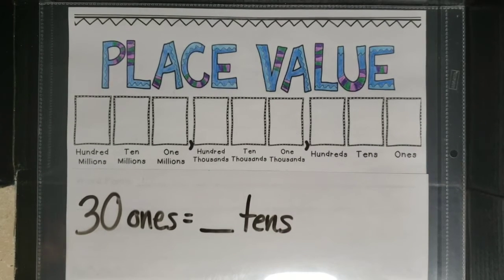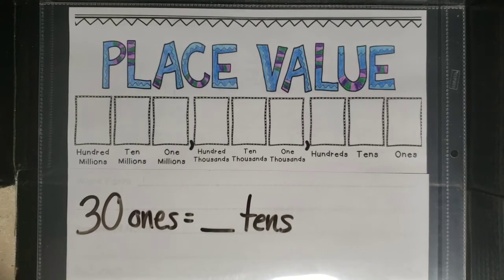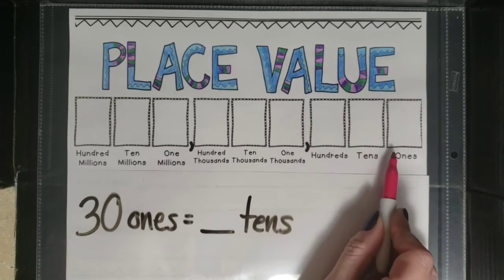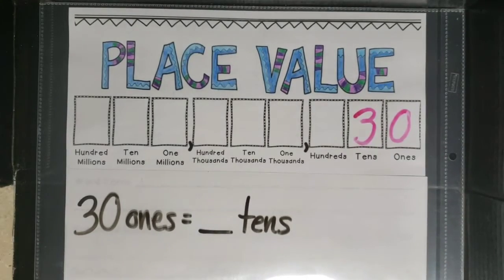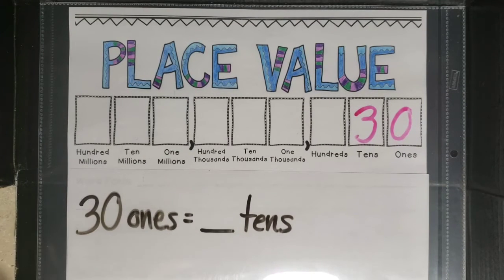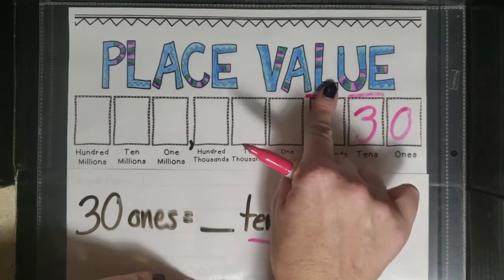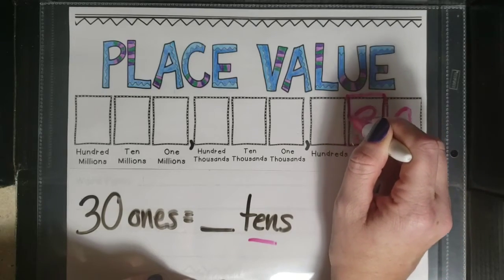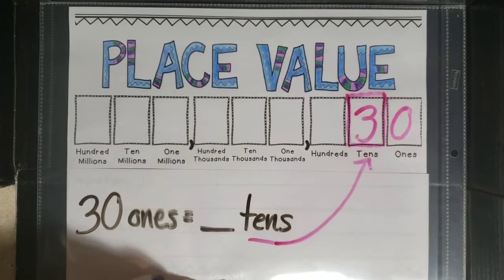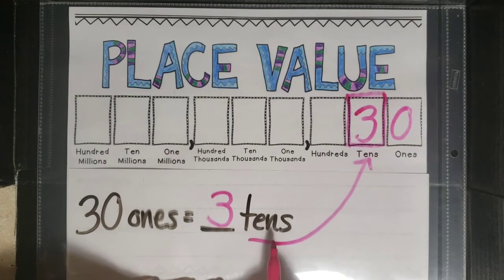In the previous examples we were converting from a larger place to a smaller place. Now we are going to do the opposite: converting from a smaller place to a larger place. So thirty ones — I know I can't write thirty in the ones place, but my number sense tells me that thirty ones is thirty. Then I'm converting to tens. I draw the box and extend. Thirty ones equals three tens, and I know this because three times ten equals thirty.